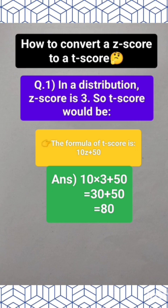We know the formula for t-score, which is 10Z plus 50, where Z means z-score.